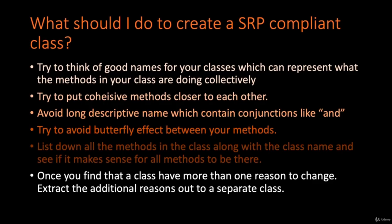When creating a new class or refactoring an older one, try to think of good names that represent what the methods collectively do. Try to put cohesive methods closer to each other and avoid long descriptive names containing conjunctions like 'and'. Try to avoid a butterfly effect between your methods — where a bug in the addition method also breaks the subtract functionality. You can also list all the methods in a class and see if it makes sense for them all to be there. Once you find a class has more than one reason to change, extract those additional reasons into a separate class.